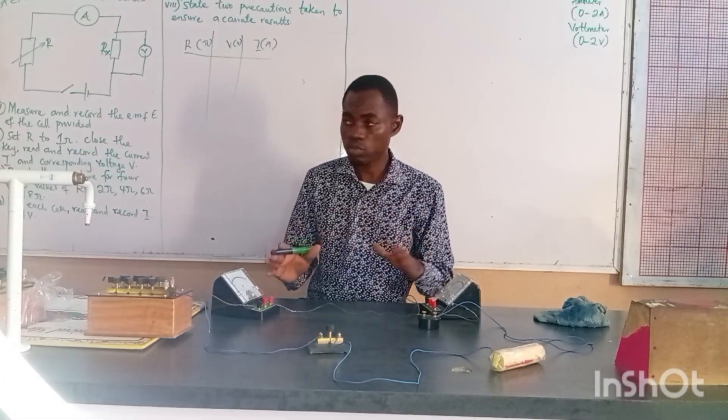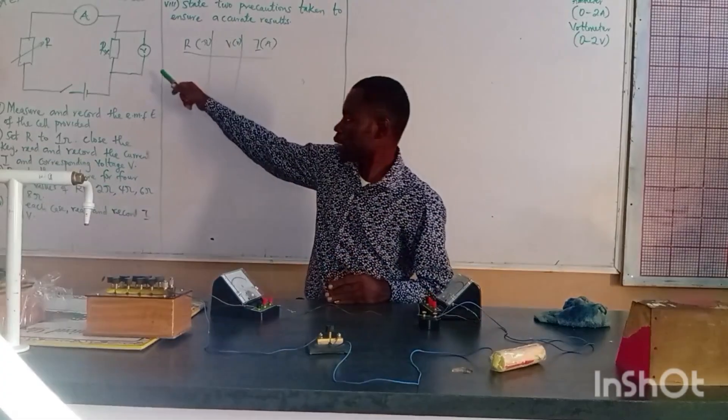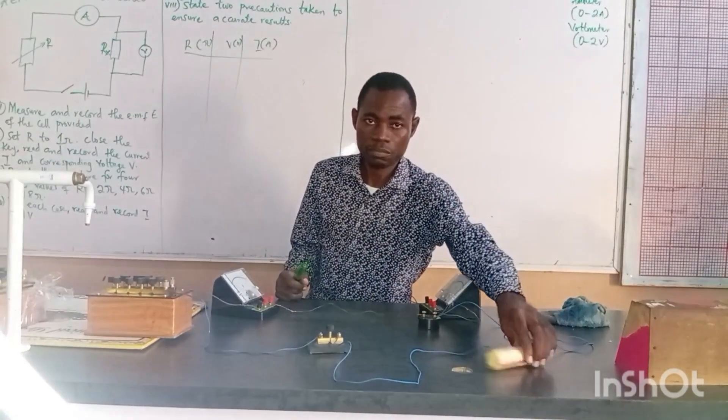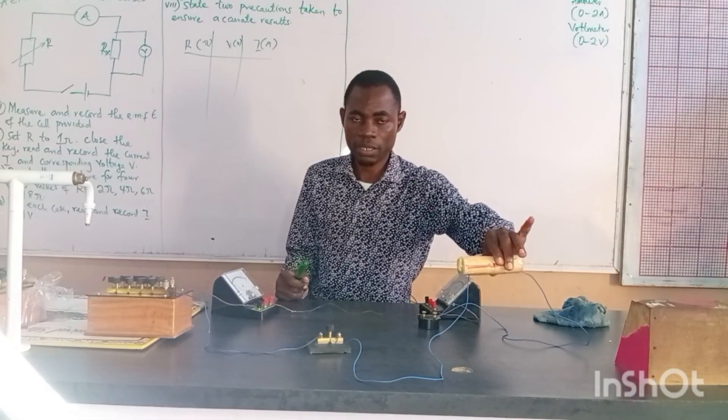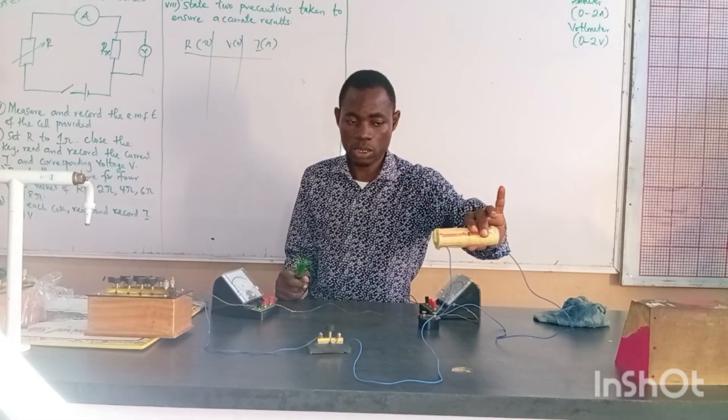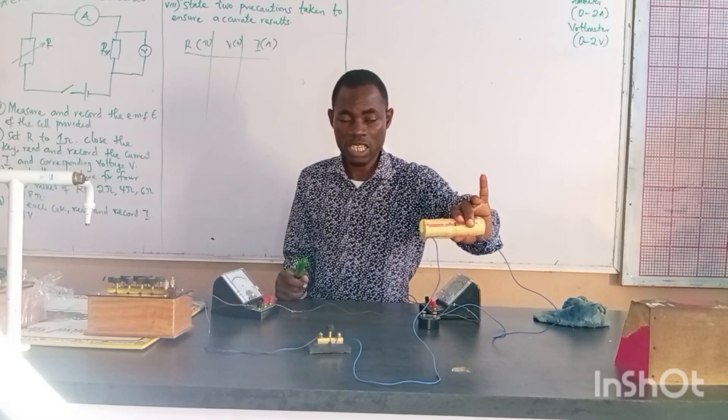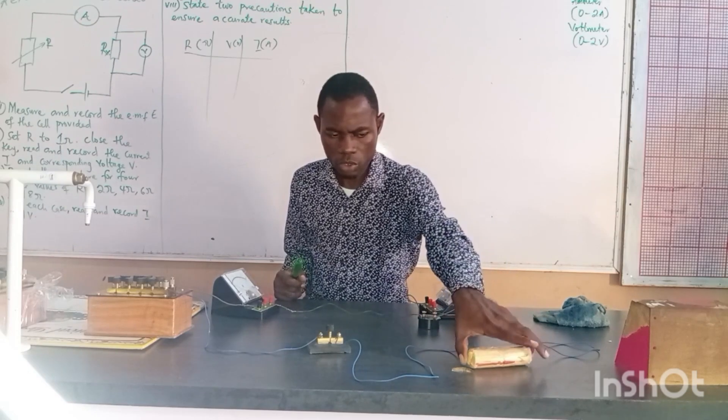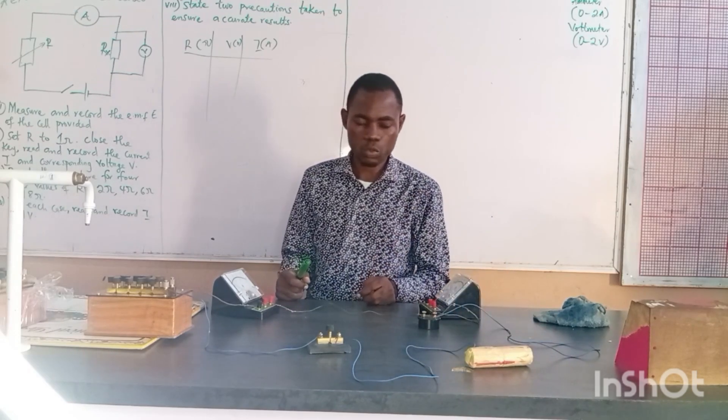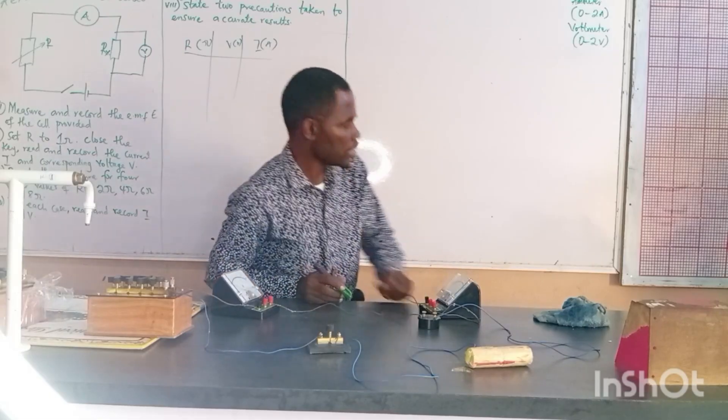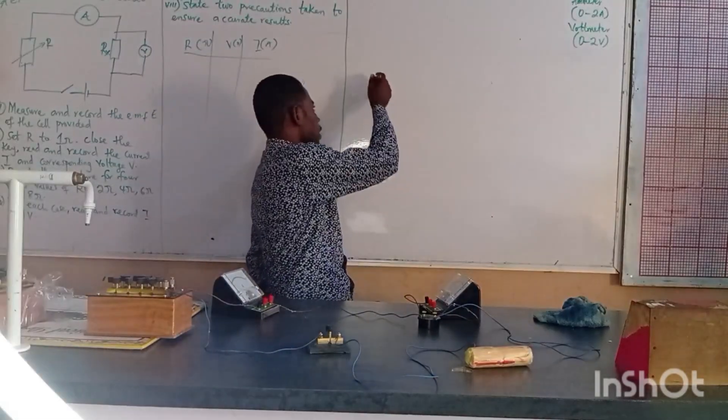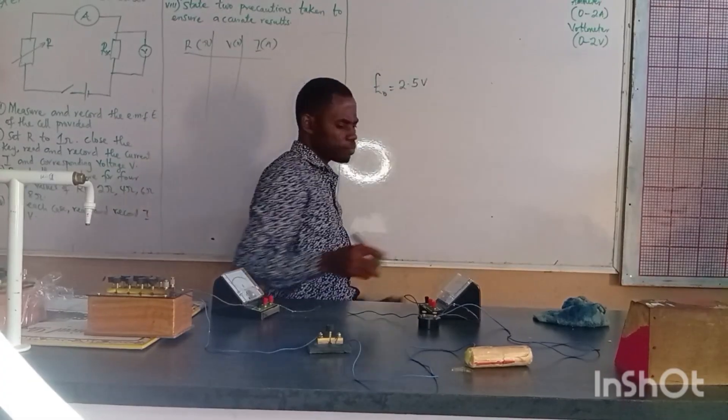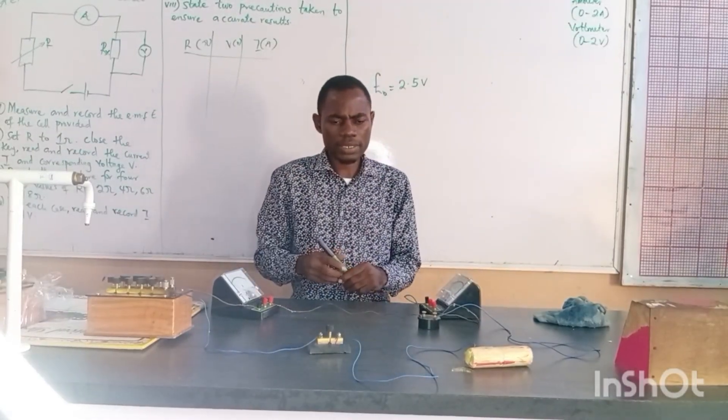This is all about Ohm's law. Both the resistor and the voltmeter, they all meet at the negative side of my battery, of my cell. When I was measuring the EMF of my cell, I measured 2.5. My E-naught, my EMF, I measured 2.5 volts.